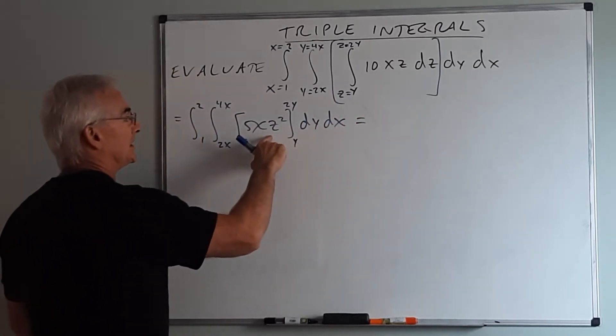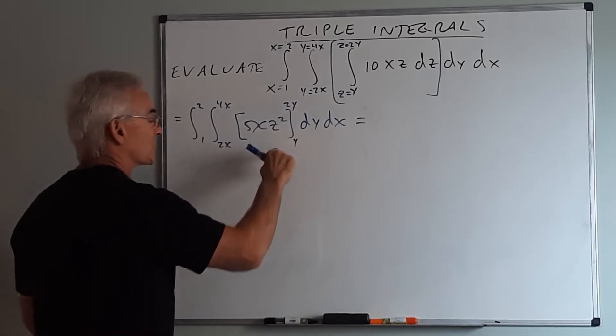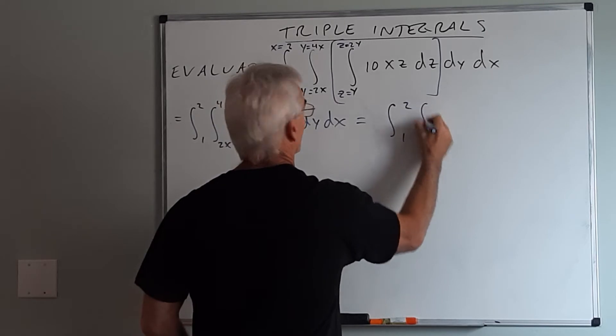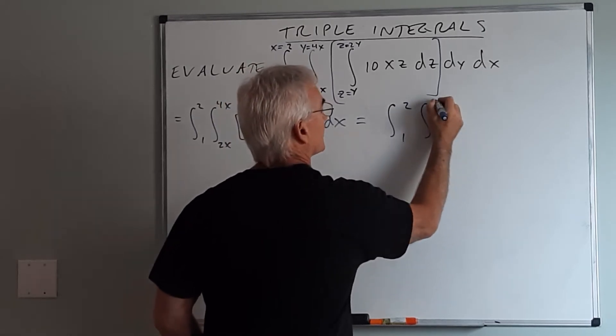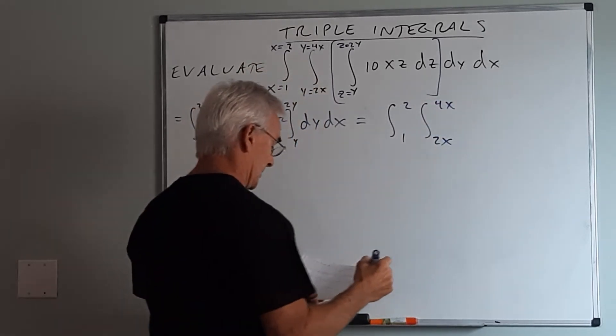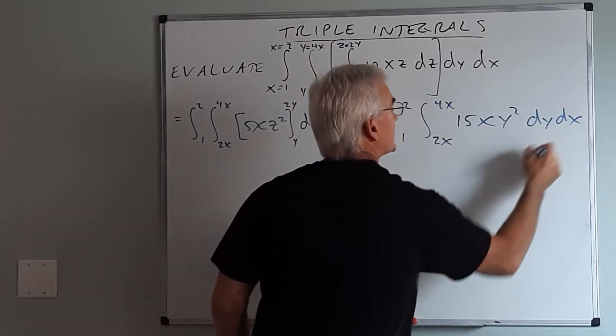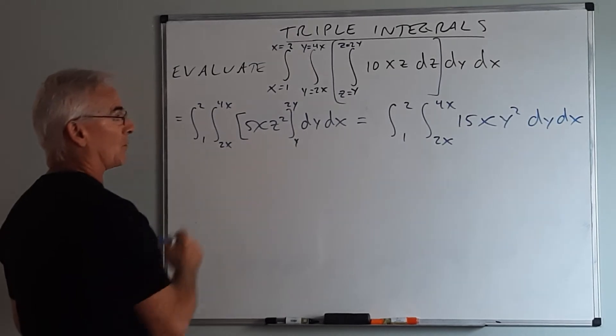Now when I evaluate this at z I'll square 2y minus the square of y and that will give me the integral from 1 to 2, from 2x to 4x, of simply 15xy squared dy dx, after I simplify that quantity.